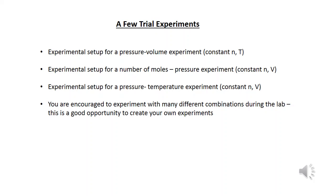Let's take a look at a few trial types of experiments you might do in this gas laws experiment. One is a pressure-volume type of experiment: take a syringe — it has volume markings on it — put a gas in it, expand it or compress it, and measure the pressure as a function of volume, keeping temperature and number of moles constant. You can also look at a number-of-moles and pressure experiment. You can also set up a pressure-temperature experiment by putting a flask inside a beaker of water and heating it up or cooling it down.